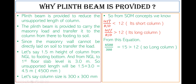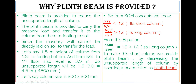Applying the equation: L_effective is 4500 mm. The column size is 300 mm by 300 mm, so both breadth and depth are 300 mm. Therefore 4500 divided by 300 equals 15. Since 15 is greater than 12, this becomes a long column. To make this column short, we provide a beam — called a plinth beam — which decreases the unsupported length of the column.